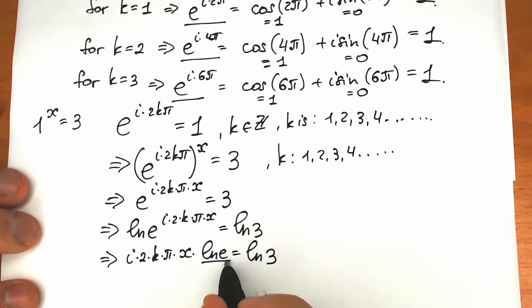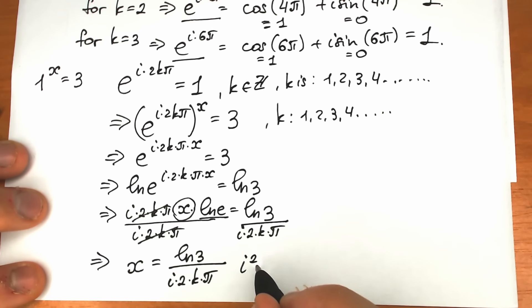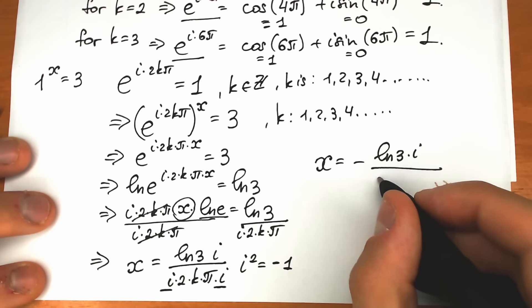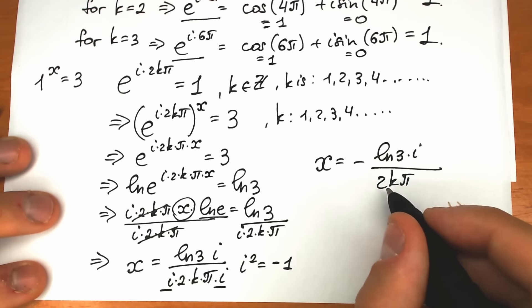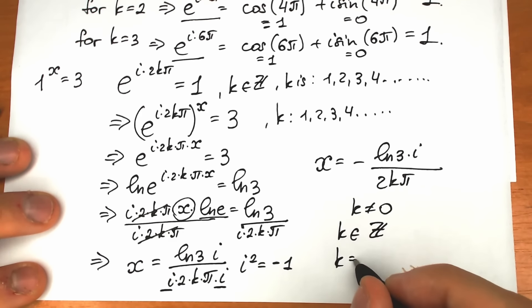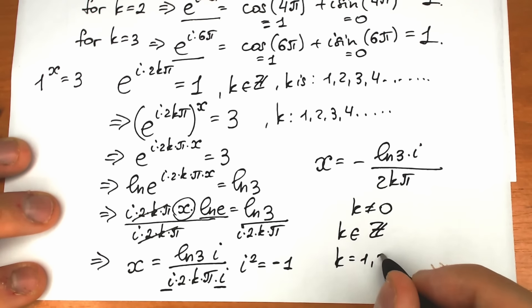So x equals natural log 3 divided by i times 2k pi. We don't want i in the denominator, so multiply numerator and denominator by i, keeping in mind that i squared equals negative 1. As a result, x equals negative i times natural log 3, divided by 2k pi, where k is a nonzero integer.